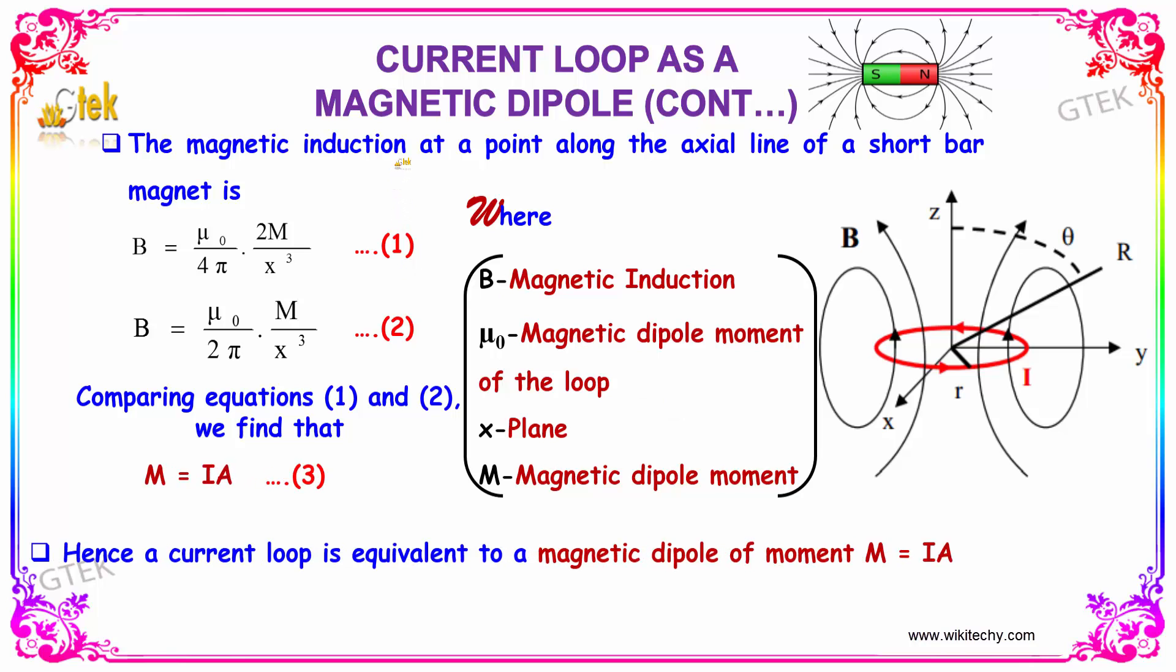The magnetic induction at a point along the axial line of a short bar magnet is given by B equals μ₀/4π times 2m divided by x³.